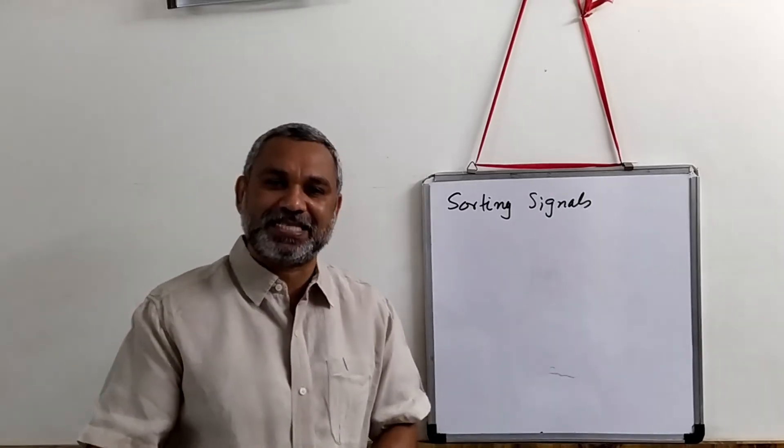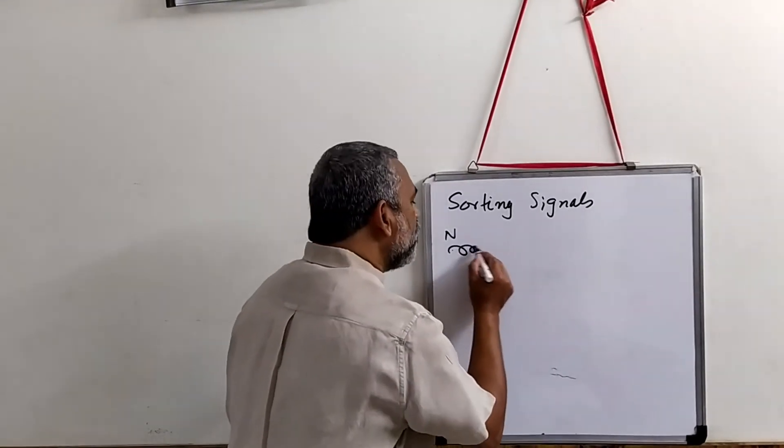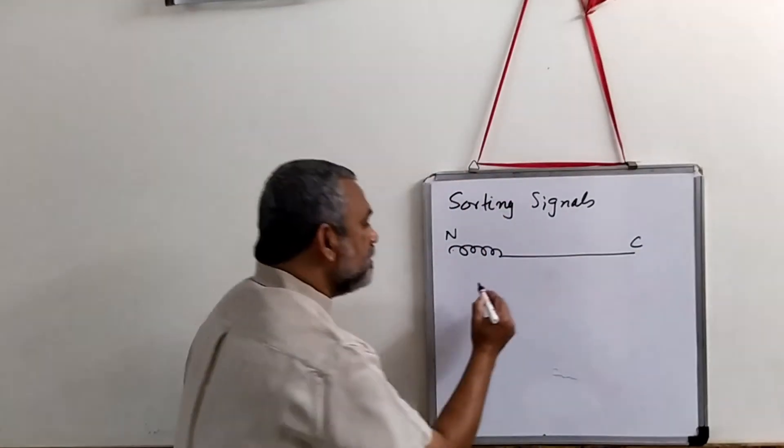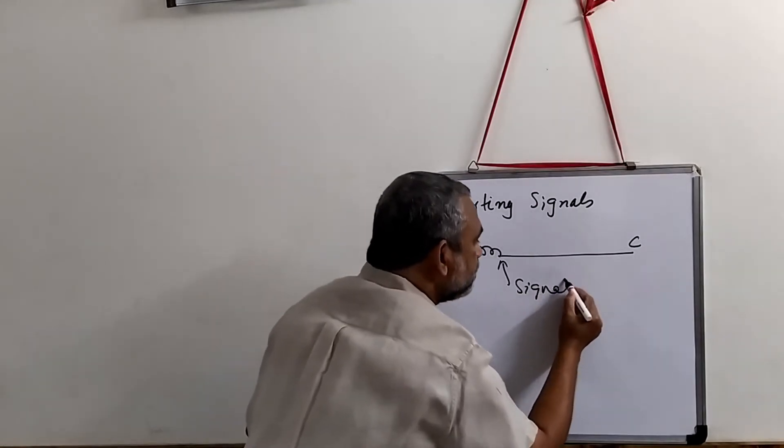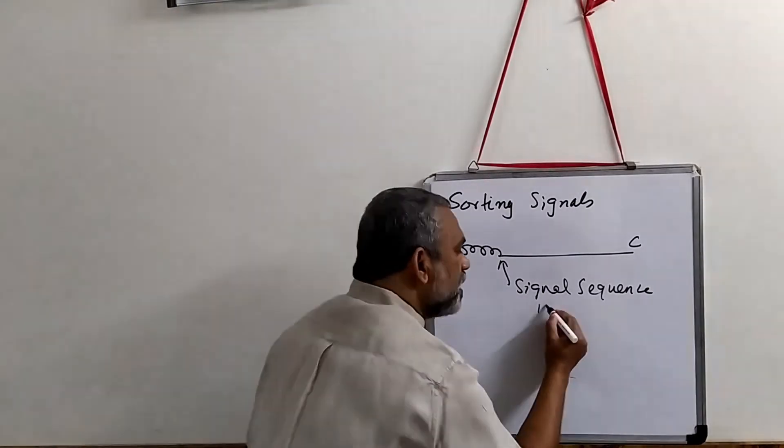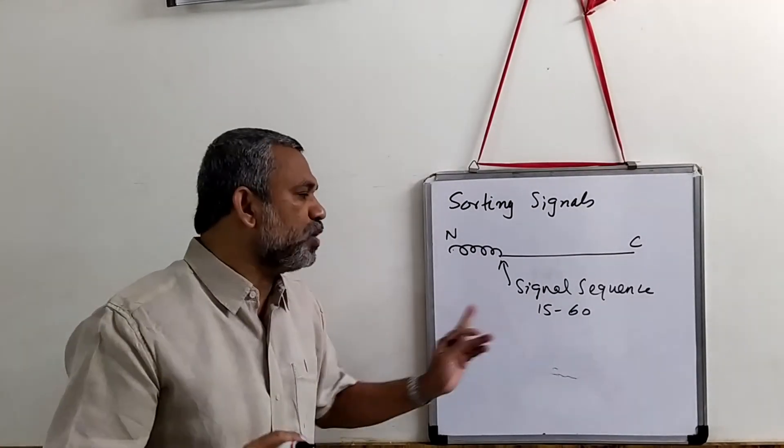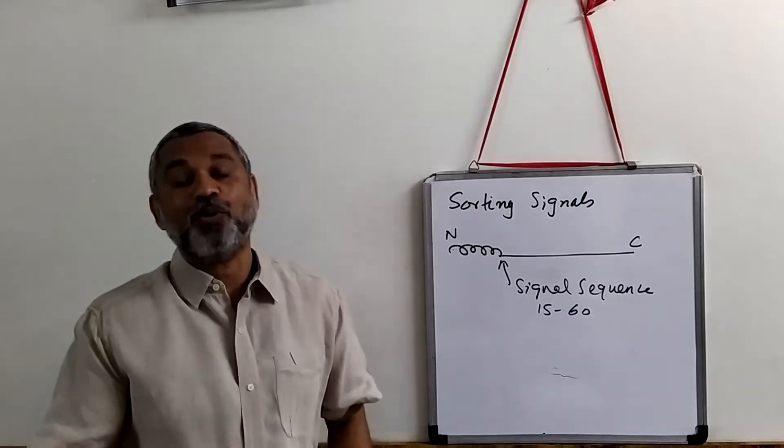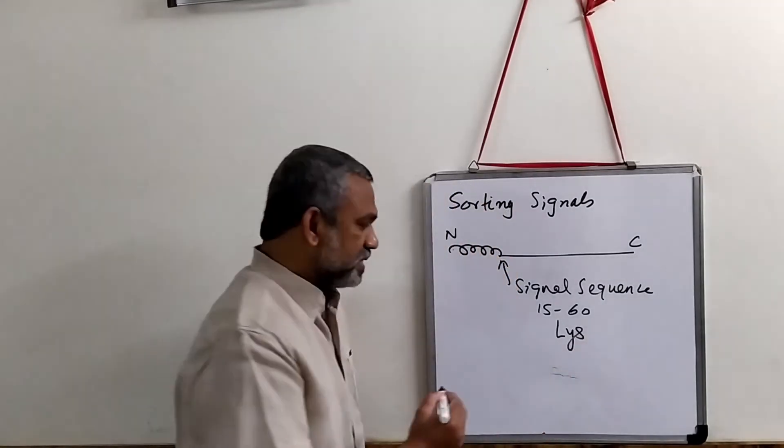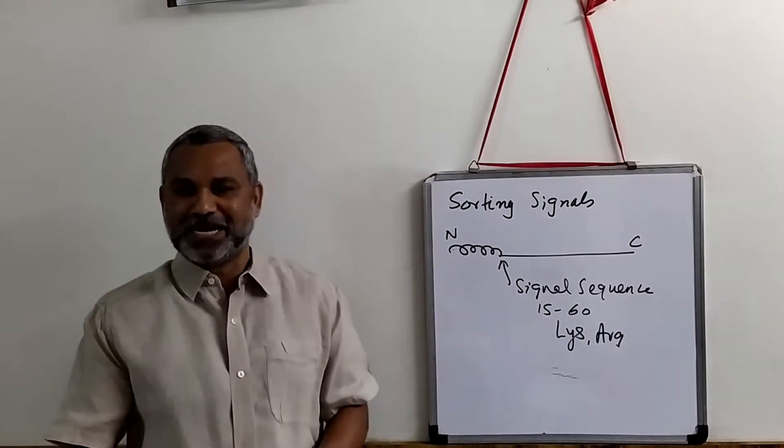There are two kinds of sorting signals. One kind of sorting signal, if you consider this is the N terminus of the protein, this is the signal sequence and then there is the protein, this is the carboxyl end and then this is the signal sequence. Normally, the signal sequence that has been identified so far will have about 15 to 60 amino acid residues. And what is normally found is it has a heavy load of hydrophobic amino acids, like lysine and arginine. These are the amino acids that are normally found on these signal peptides.